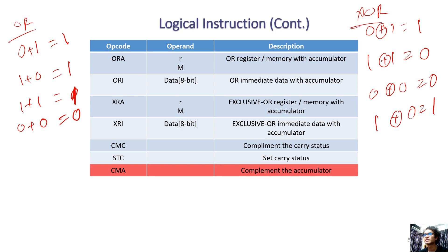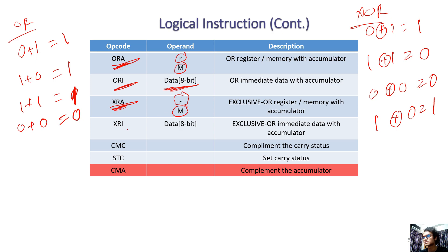ANA is a different way we can do AND — ANA with a register. ORI: 8-bit data. When 8-bit data is there, OR is done. XRA: this is XOR — XOR with a register or memory. XRI: this is XOR with immediate data.